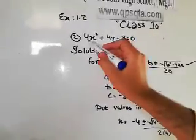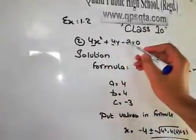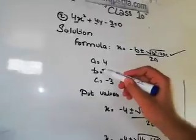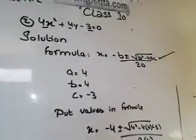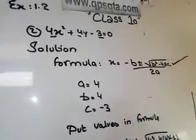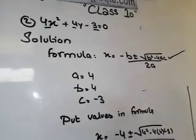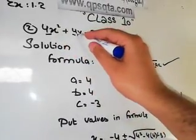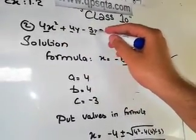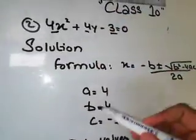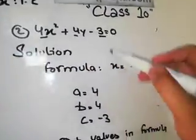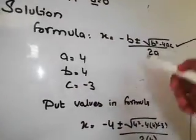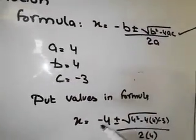The first value is a, the second value is b, and the third value is c. So a = 4, b = 4, and c = -3. Now what we will do is put the values into the formula. Let's put the values in this formula.